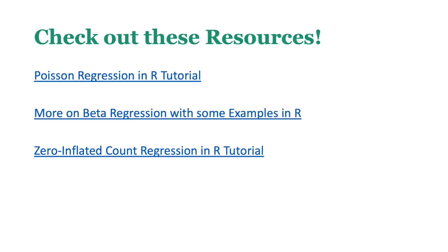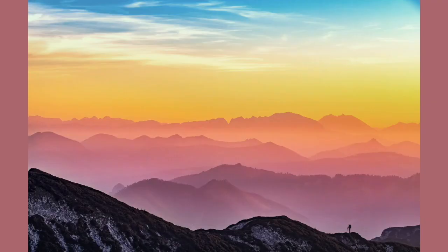For the stuff we covered today, check out the resources for Poisson, beta, and zero-inflated count regression — they'll help clarify anything I missed. I know I went quickly; that is kind of the design of this lecture. Please rewatch this, and if you have questions about interpretation, reach out. And as always, it's nice to finish on a beautiful picture — this one's by Simon Berger from Unsplash, so shout out to Simon for the gorgeous photo.